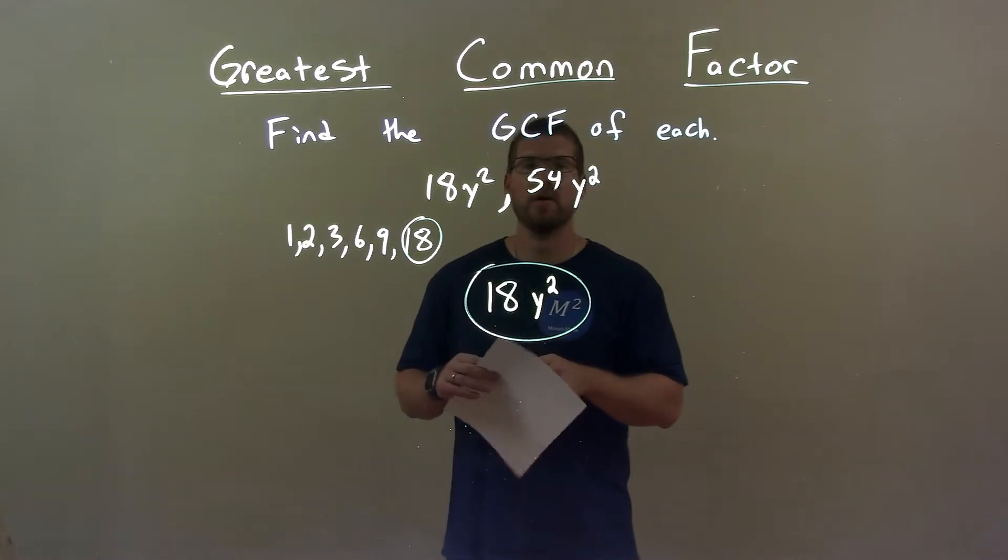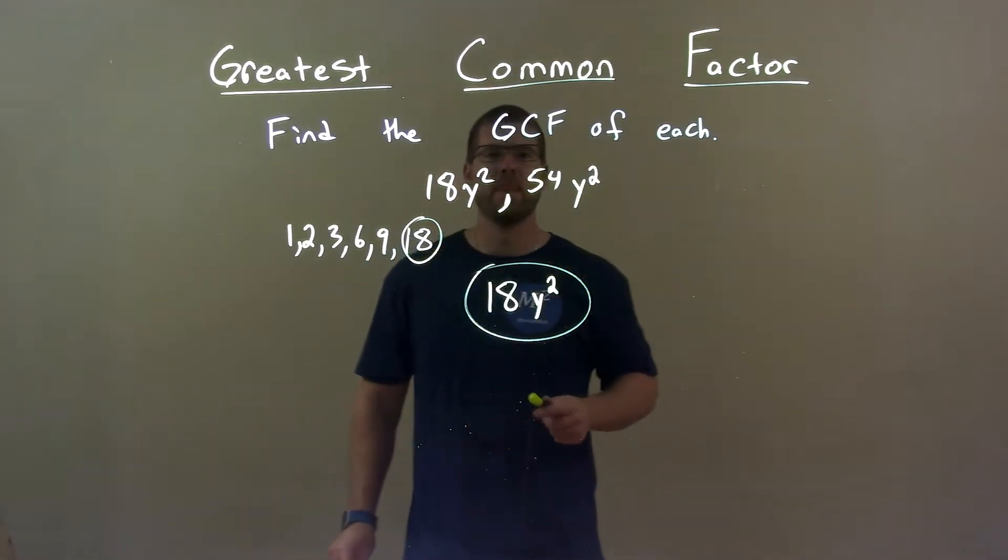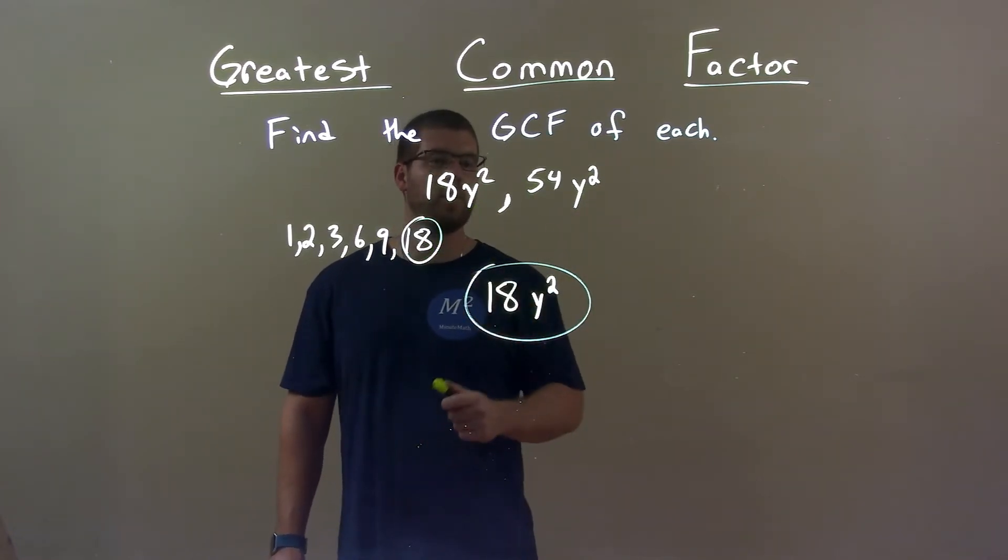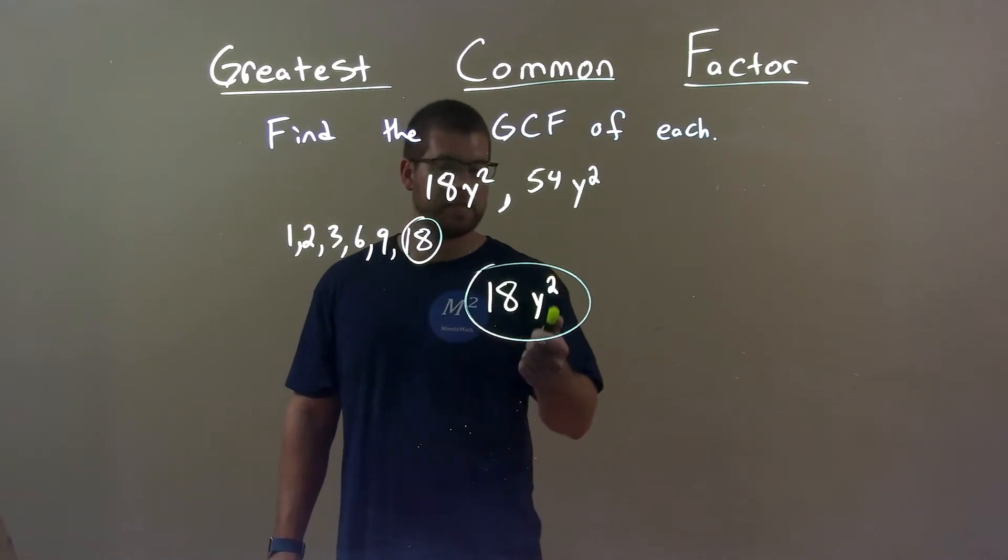Quick recap. We had 18y squared and 54y squared. Well, I found all the factors of 18, and the largest one that went into 54 was 18. y squared is in both, and so again, final answer: 18y squared.